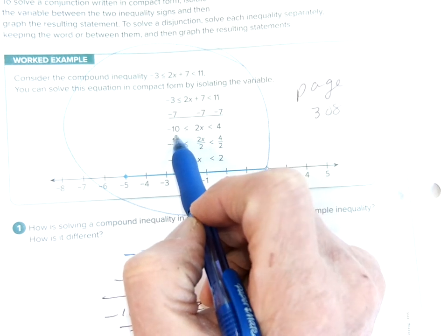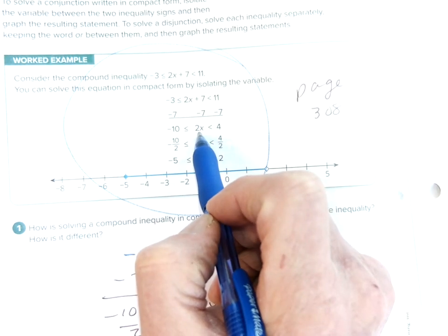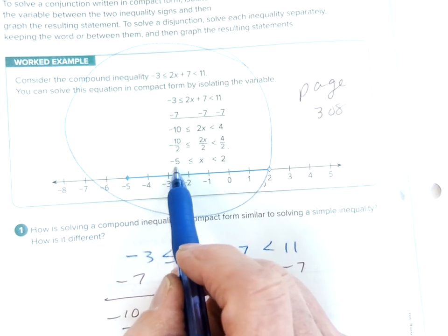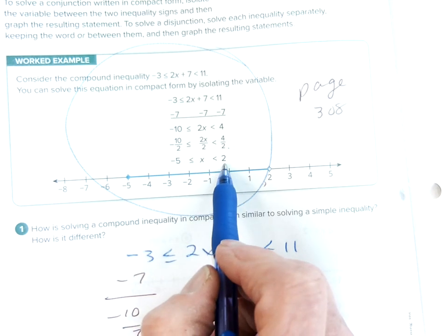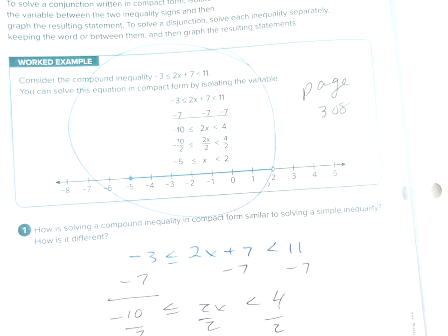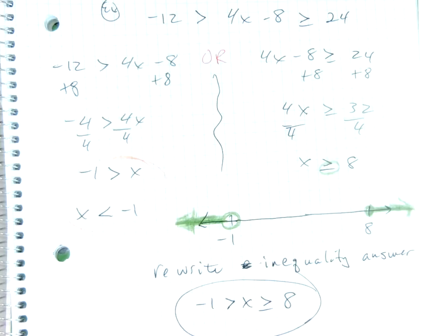We get a 4, and then we get our negative 10. And then we divide by 2, but divide everything by 2 on all sides. Divide by 2, divide by 2, divide by 2. Then we get negative 5 is less than or equal to x, which is less than 2. Some kids prefer to do that, and some kids prefer to break it up into two equations. It's up to you.